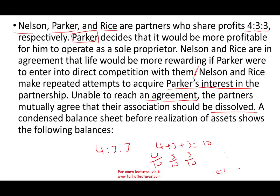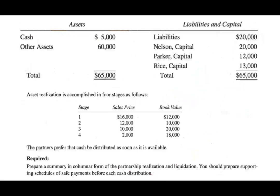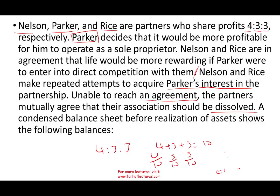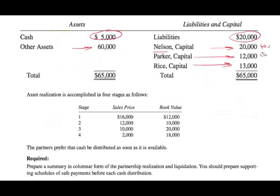The condensed balance sheet before realization of the assets is shown here. They have $5,000 in cash, $60,000 in other assets, and $20,000 in liabilities. Nelson's capital is $20,000, Parker's capital is $12,000, and Rice's capital is $13,000. They distribute profit 40%, 30%, and 30%.